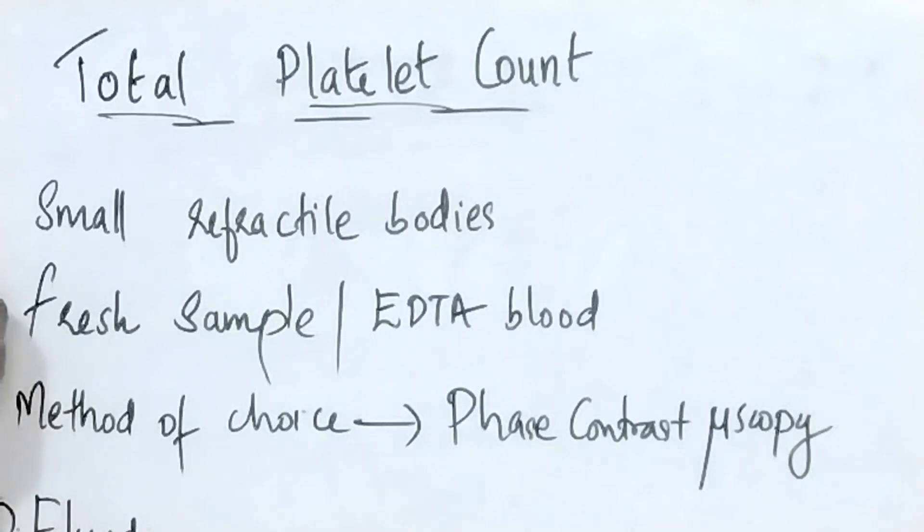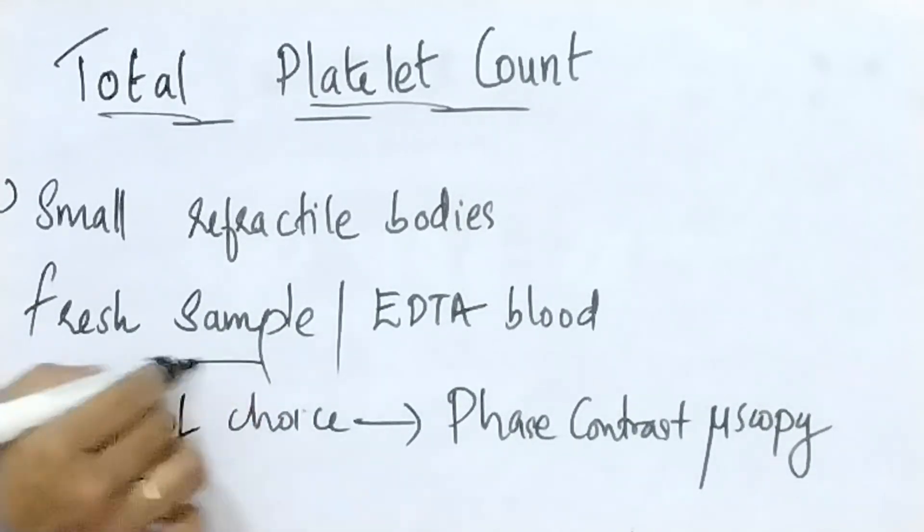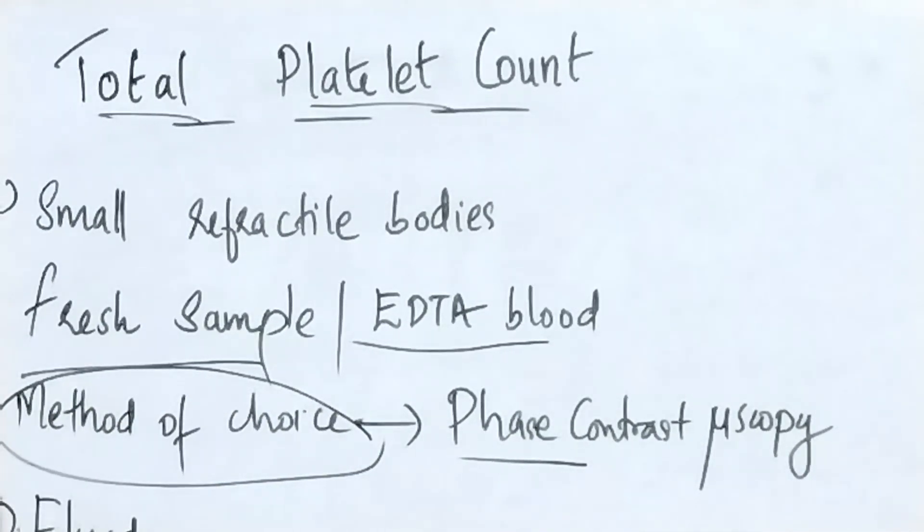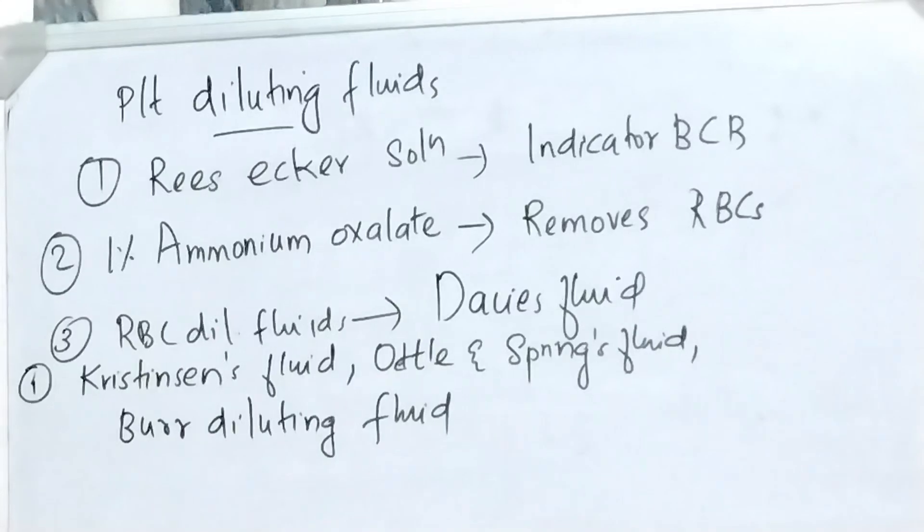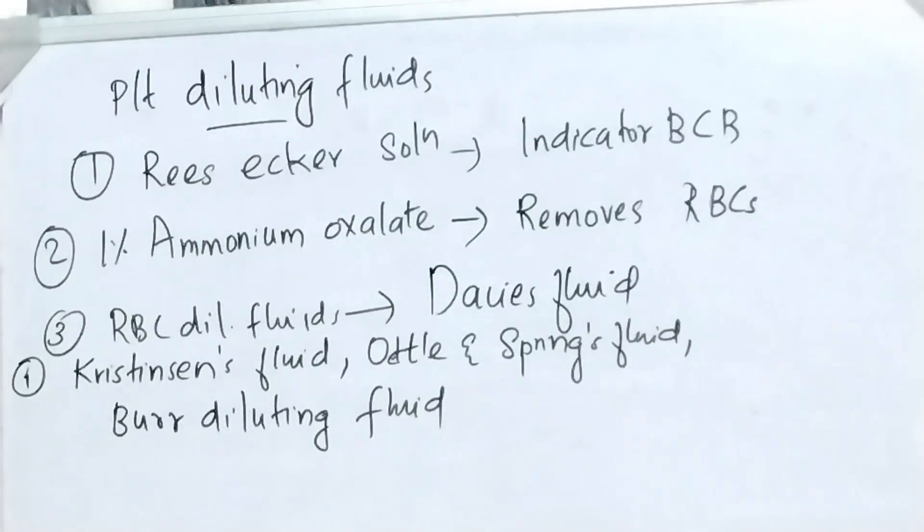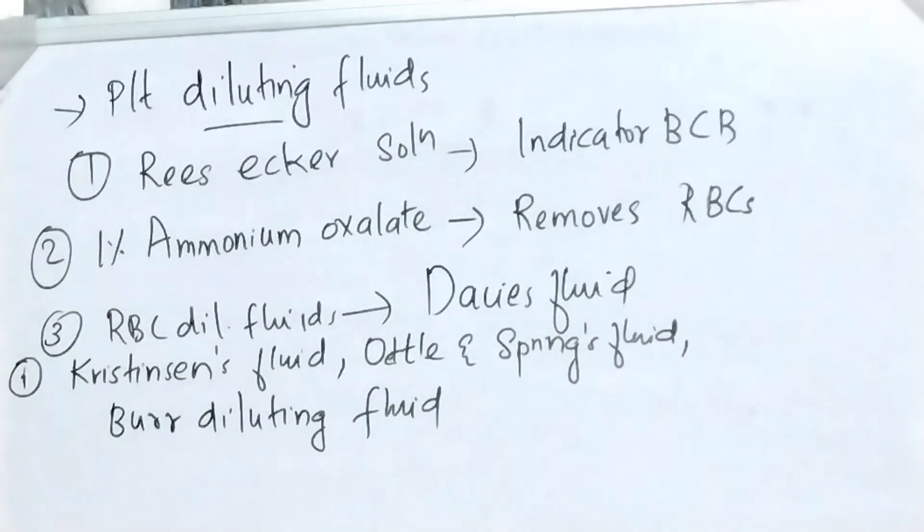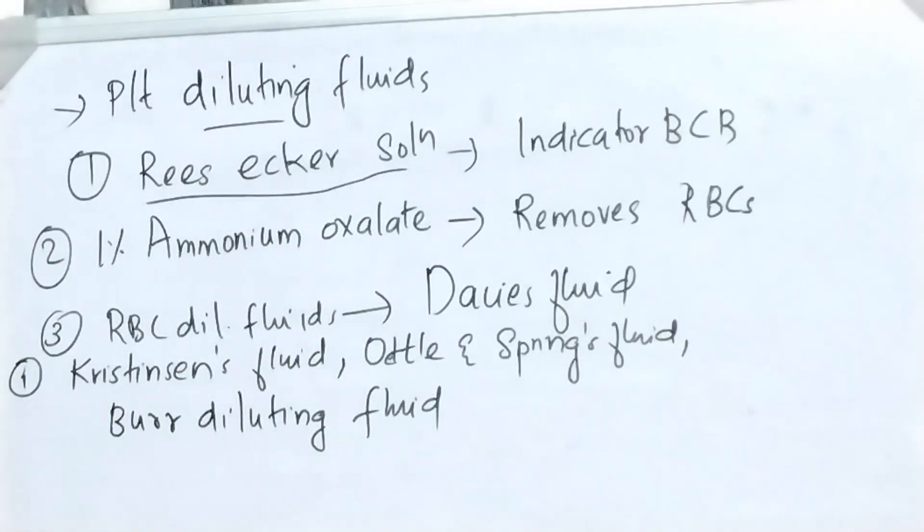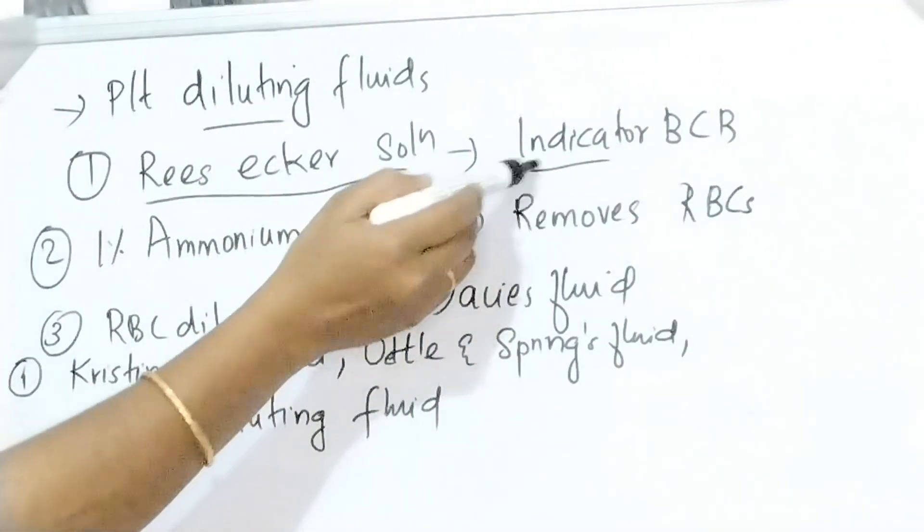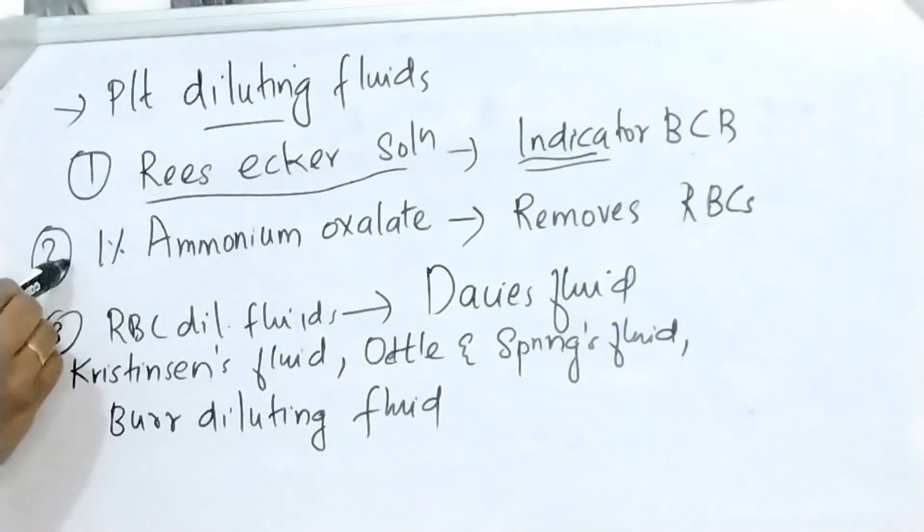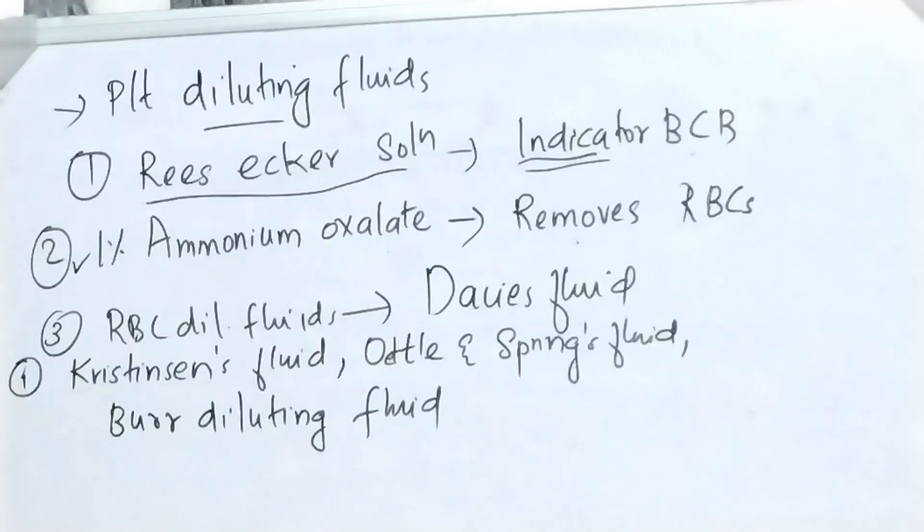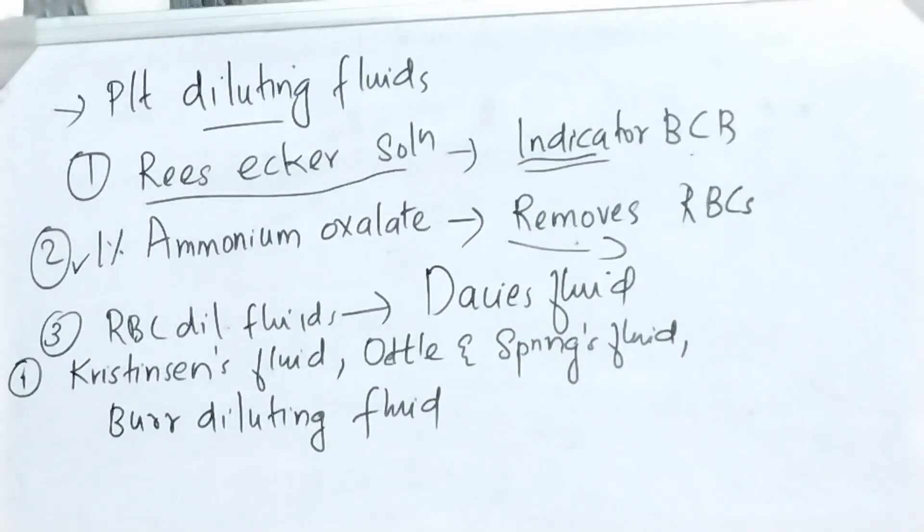Next is total platelet count. Platelets are small refractile bodies. It can be done in fresh sample or in EDTA blood sample. Method of choice is phase contrast microscopy. For platelet count, platelet diluting fluid and blood is taken in RBC diluting pipette. The common diluting fluid is Rees-Ecker solution. Bromocresol blue is used as indicator in Rees-Ecker solution.